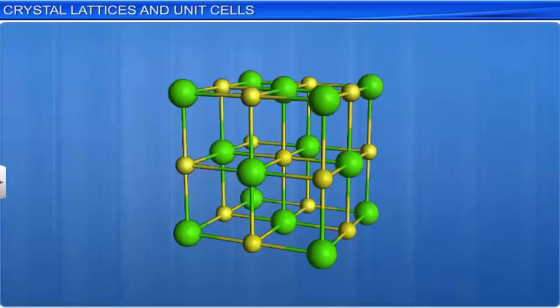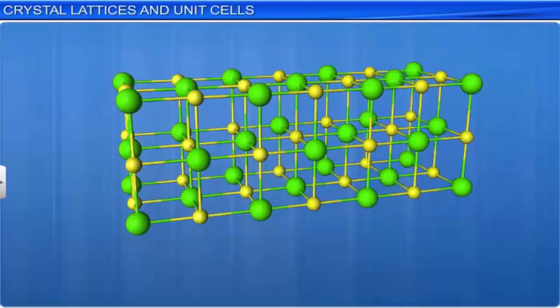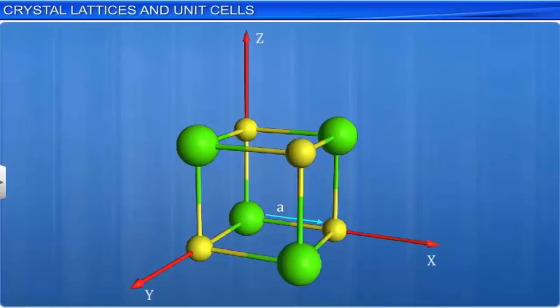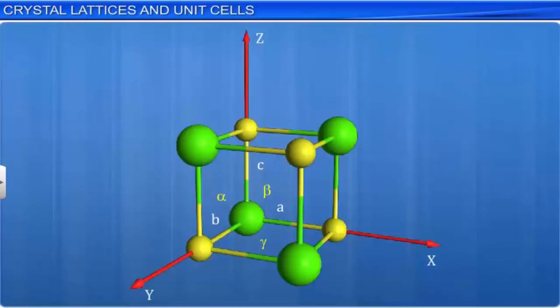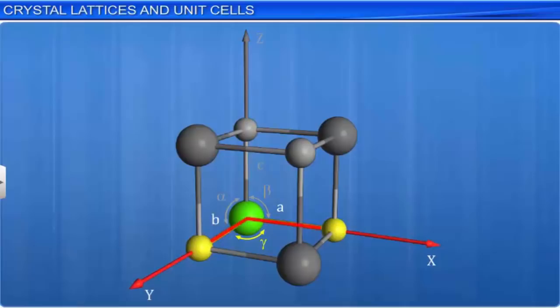A unit cell is characterized by distances A, B, and C along three edges, and angles alpha, beta, and gamma between pairs of edges. Alpha is the angle between edges B and C, beta is the angle between edges C and A, while gamma is the angle between edges A and B. Edges A, B, and C may or may not be perpendicular to each other.